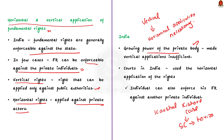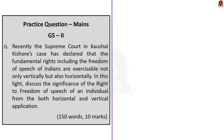In summary, we saw the evolution of freedom of speech, the constitutional provisions in India under Article 19, the significance of freedom of speech, and the difference between vertical and horizontal application of fundamental rights — as reaffirmed recently in the Kushal Kishore case, where the Supreme Court concluded that fundamental rights can be enforced even against persons other than the state and its instrumentalities.